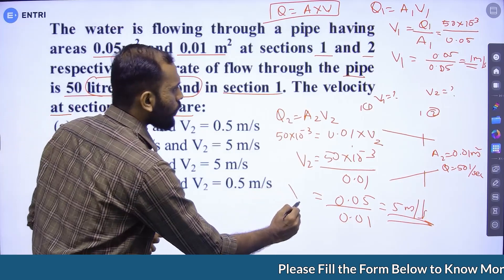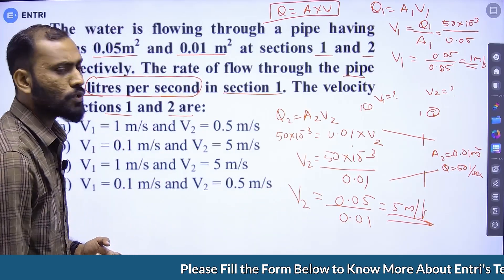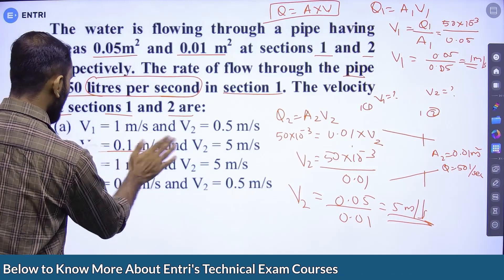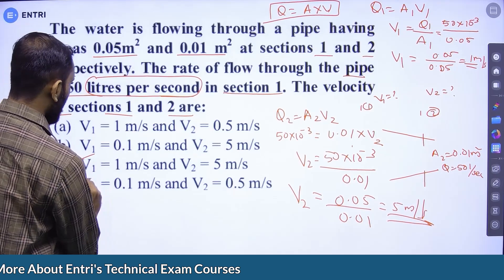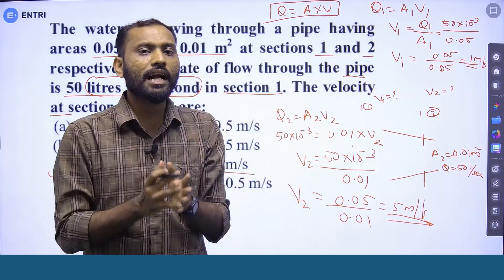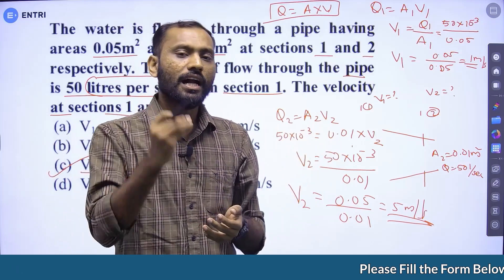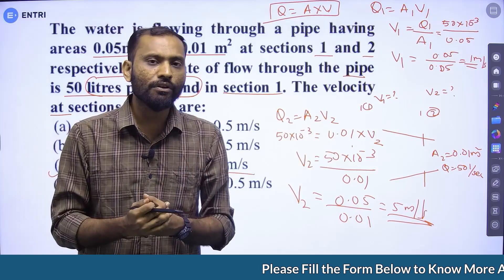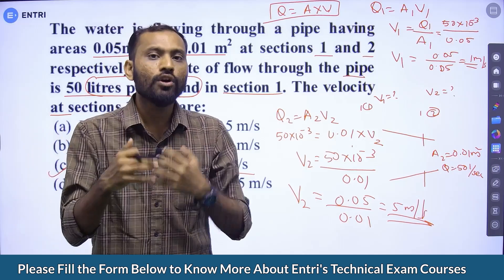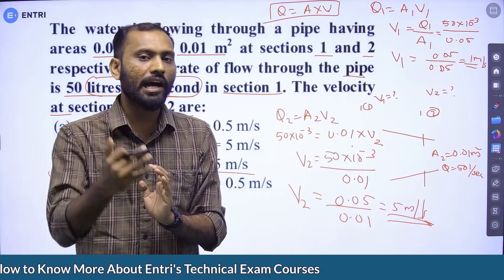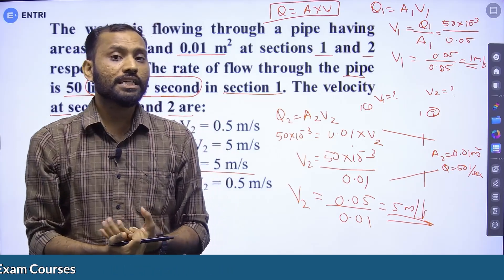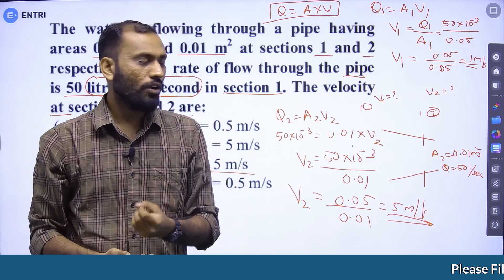V1 equals 1 meter per second and V2 equals 5 meter per second. Option C is the correct answer. We used the continuity equation: A1 V1 equals A2 V2.